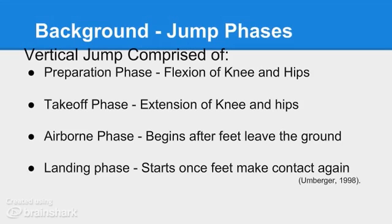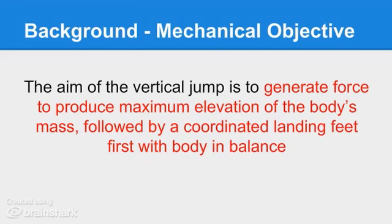Once the feet leave the ground, the airborne phase begins, during which no additional force can be generated. The maximum vertical height of the jump is determined by the force generated prior to leaving the ground. The landing phase begins when the feet return to earth and continues until the body is back in standing position. Mechanically, the aim of the vertical jump is to generate force to produce maximum elevation of the body's mass, followed by a coordinated landing feet first with body in balance.